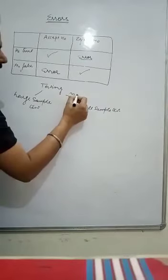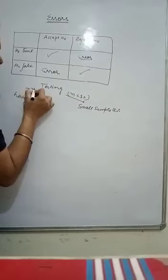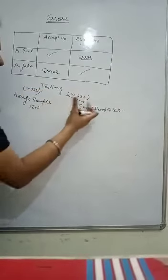Generally, for n less than 30, we go for small sample test and for greater than 30, we go for large sample test. n means the number of items we are using in the sample.